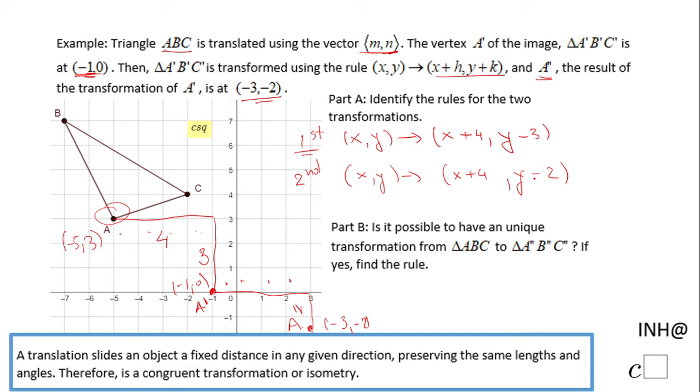Now this is Part A. Part B asks if it's possible to have a unique transformation from triangle ABC to triangle A''B''C''. Is it possible to do one transformation to go from here to here to here?